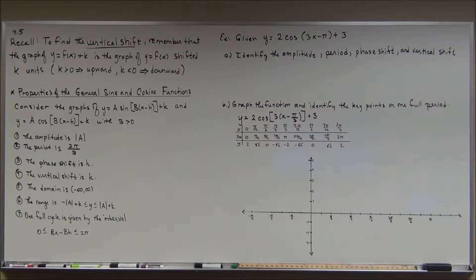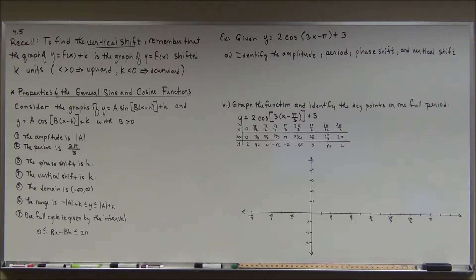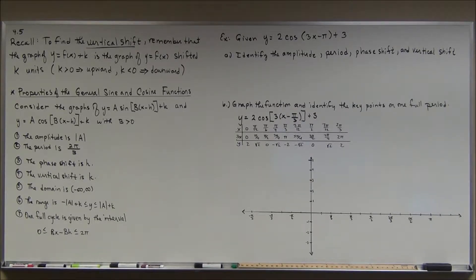We're going to pick back up where we left off from the last video — still in section 4.5, having to do with graphs of the sine and cosine functions. After looking at the basic parent functions y = sin(x) and y = cos(x), we added dilations — stretching or shrinking vertically or horizontally. Now we're adding translations as well as considering reflections, including reflection in the x-axis. We've done the horizontal shift, sometimes called the phase shift, and now we're going to look at the vertical shift.